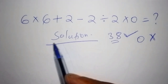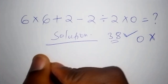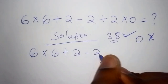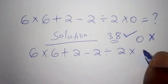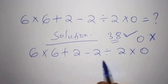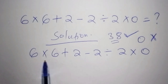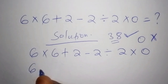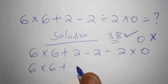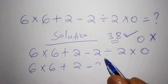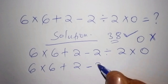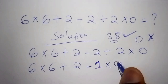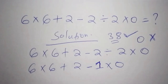Here we have: six multiply by six, plus two, minus two divide by two, multiply by zero. In this case, you are going to start with the division — don't work out the multiplication first. So we write things the way they are: six multiply by six, plus two, minus... then we work out two divide by two, which gives us one, then multiply by zero.